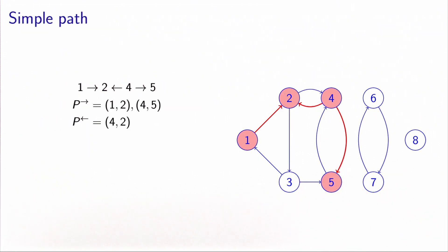In this example, we have a simple path which is not forward. So here, we start from node 1. We follow the arc 1, 2. Then to go from node 2 to node 4, we follow the arc 4, 2 in the reverse direction. And then from 4 to 5, we follow the arc 4, 5.